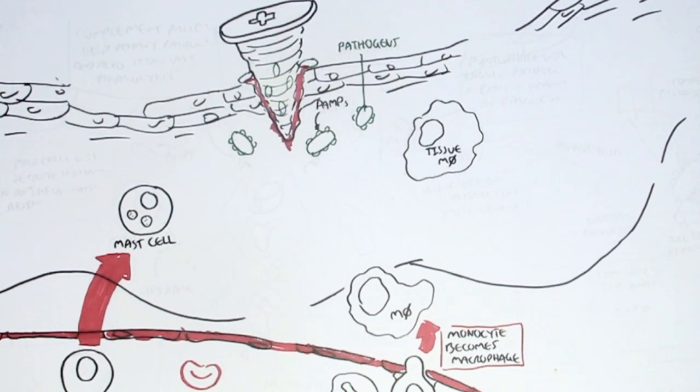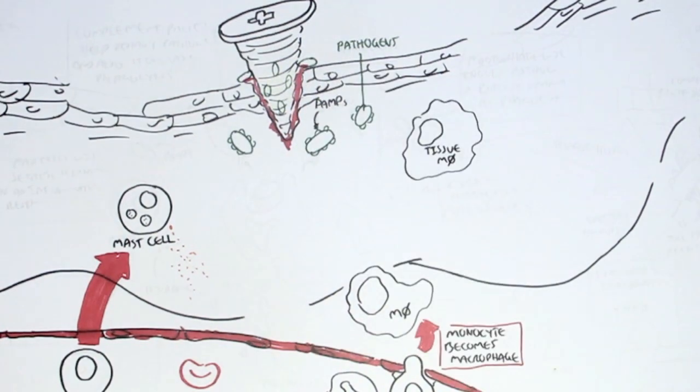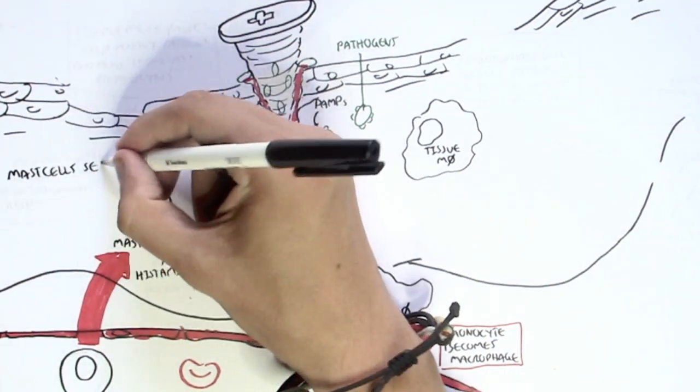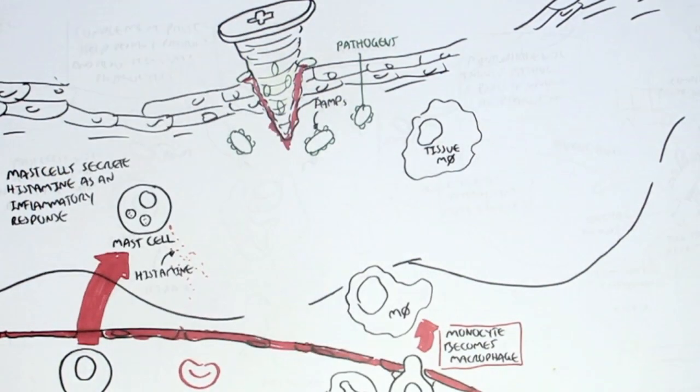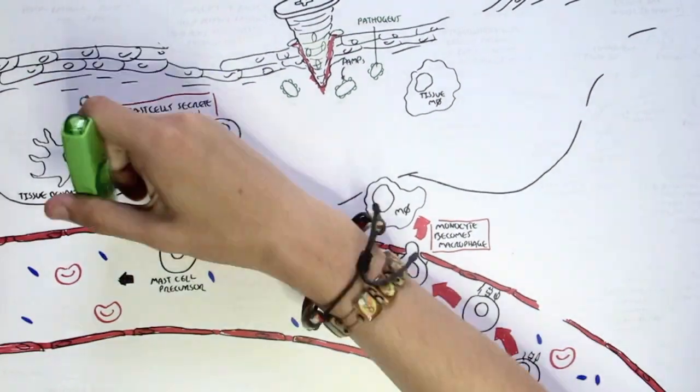Now, these innate immune cells will recognize the PAMPs of this pathogen. And, for example, the mast cell would recognize this and will start secreting histamine as an inflammatory response or as a pathogen invading response.